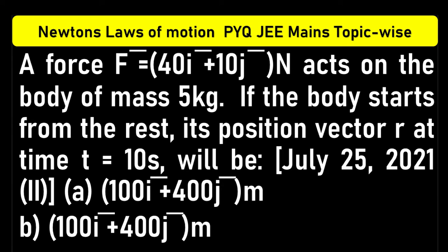Of course, F is equal to 40i plus 10j acts on the body of mass of 5 kg. If the body starts from rest, its position vector r at time t is equal to 10 seconds will be its position vector r.